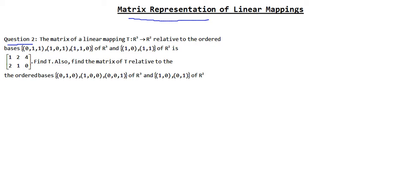The question says that the matrix of a linear mapping which takes a vector of R3 to a vector of R2, relative to the ordered basis (0,1,1), (1,0,1), (1,1,0) for R3, and the first and second vectors of the basis of R2, is given. We have to find the transformation T. So the matrix of T relative to the ordered bases of R3 and R2 is given.